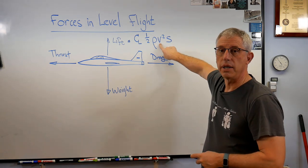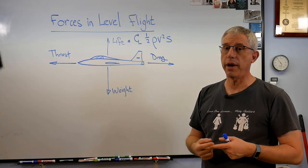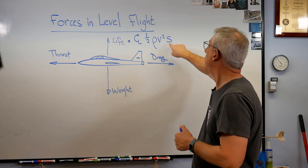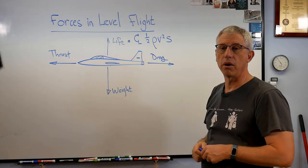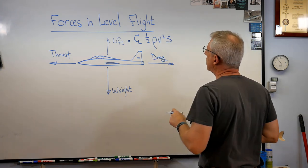V is velocity and lift is a function of velocity squared. So remember, if you double speed, lift goes up by a factor of four. That squared, that's a big deal. S is the area. That's the area of the wing.